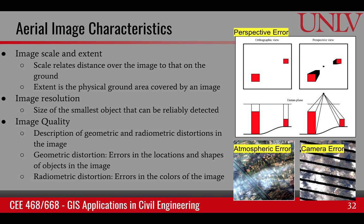When looking at aerial photographs or aerial images, we need to consider image scale and extent. Scale relates distance over the image to that on the ground. Extent is the physical ground area covered by an image — it could be a small neighborhood, or if it's a high-altitude aeroplane, it could be a whole city. Image resolution is the size of the smallest object that can be reliably detected, related to the pixel size of the image. We can also describe the quality of the image based upon its geometric and radiometric distortions.